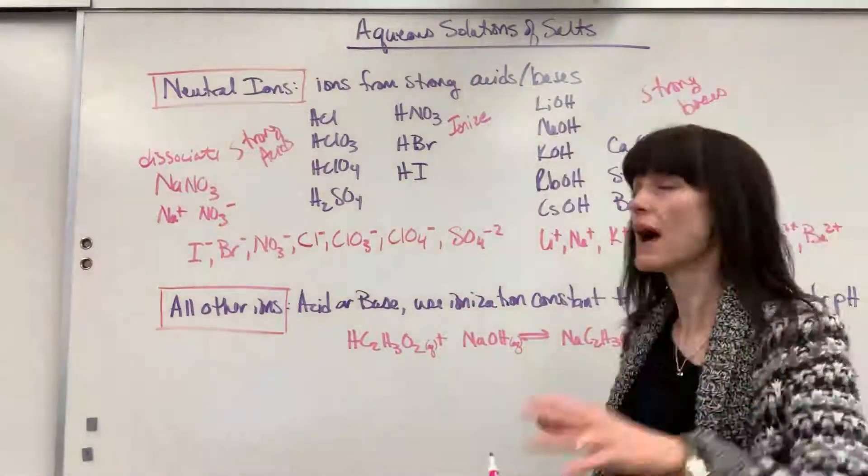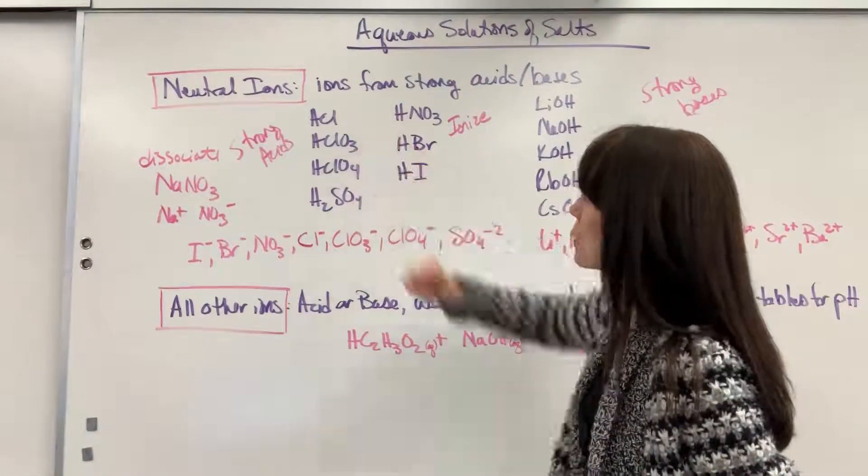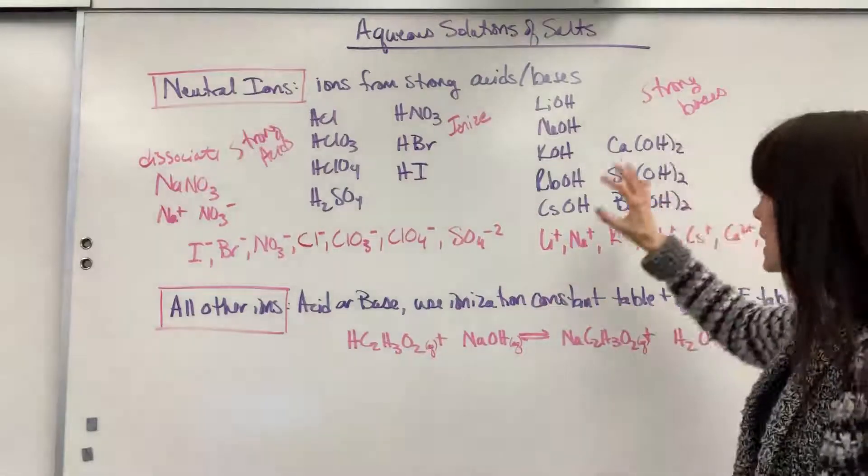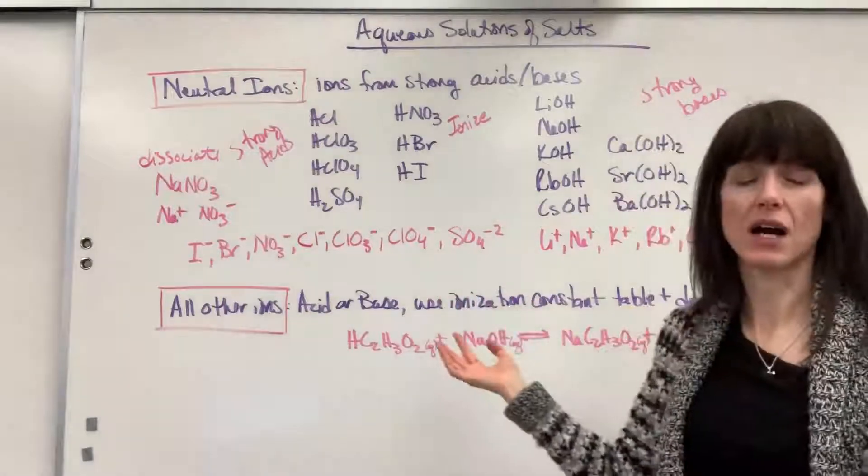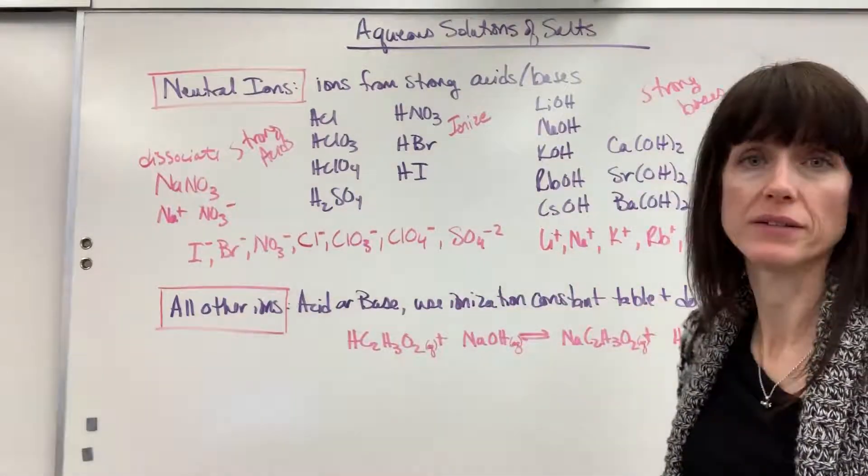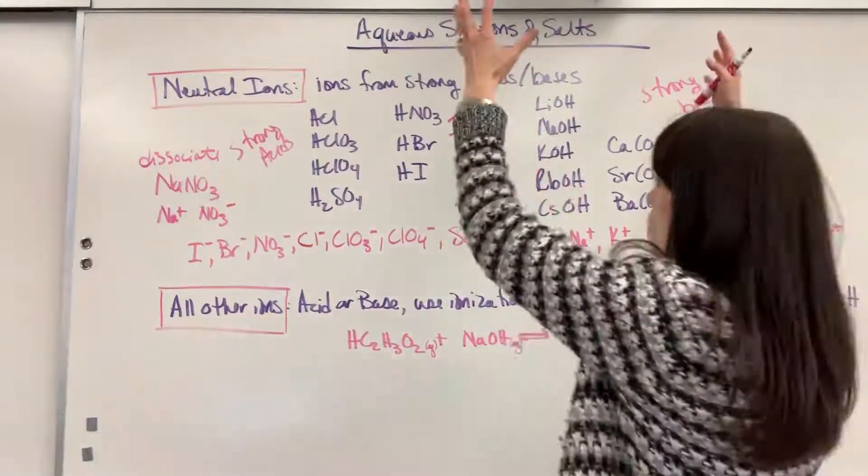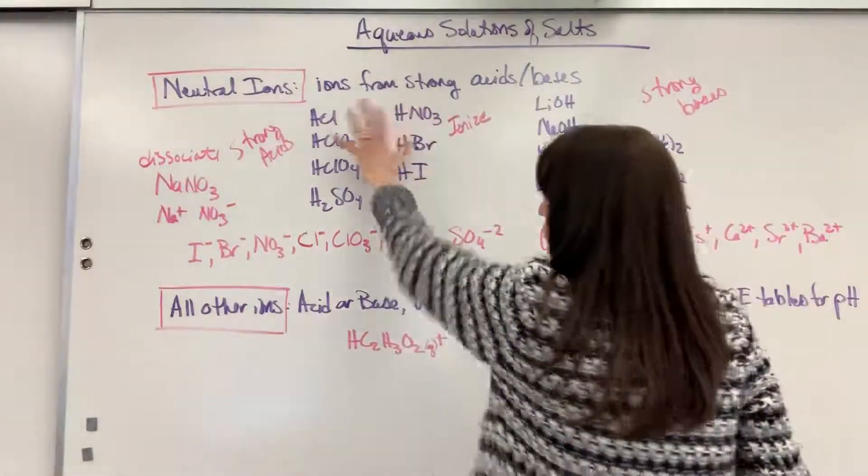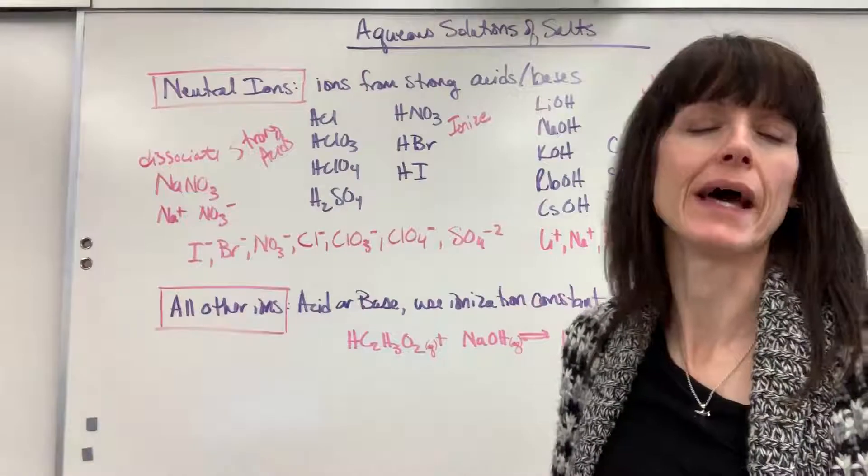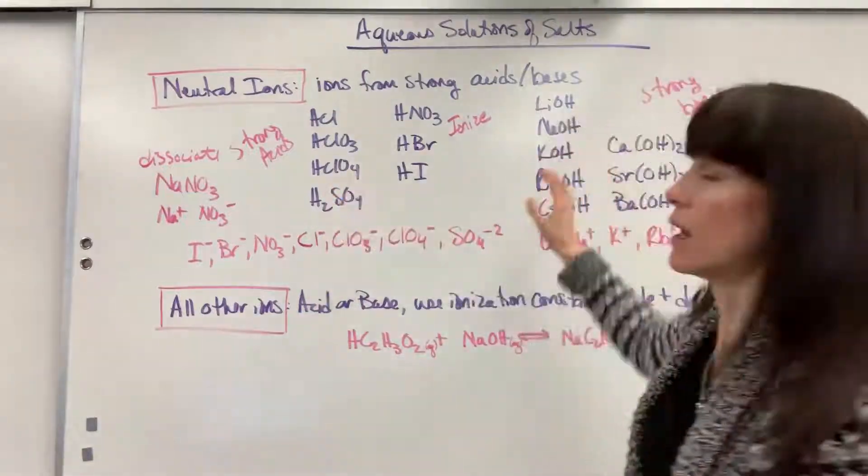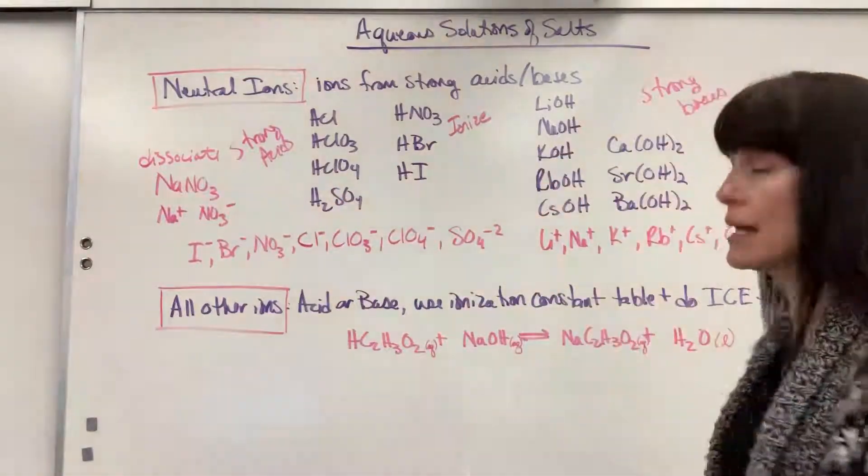So as long as you have your seven strong acids, eight strong bases memorized, this is going to be a total of 15 ions. They're your 15 neutral ions and it's because these will 100% break apart. 100% ionize, 100% dissociate. It means the same thing, which is technical. Becomes an ion, already is an ion.